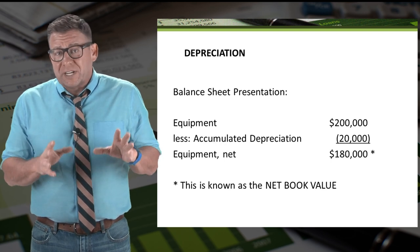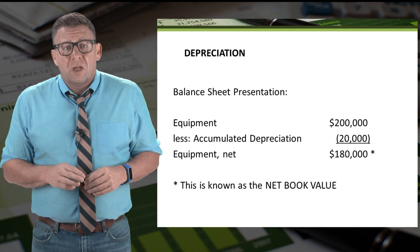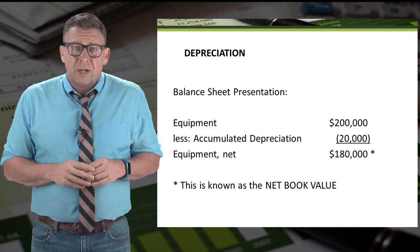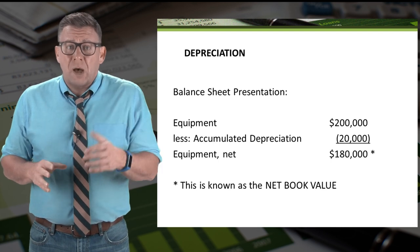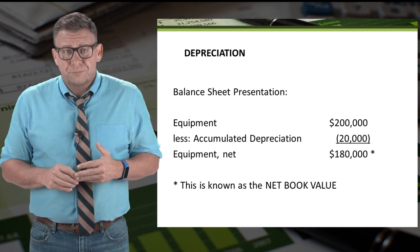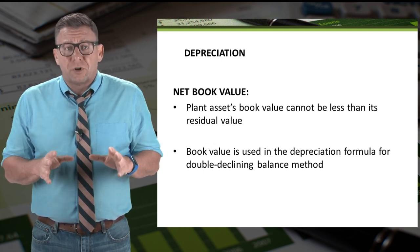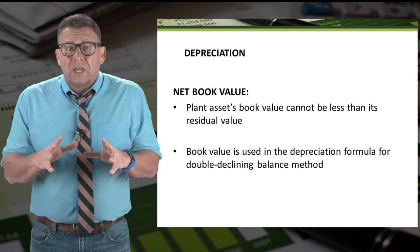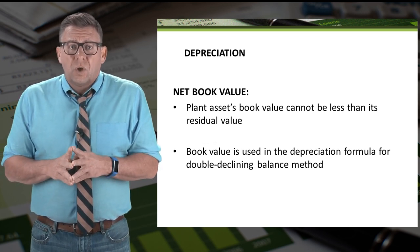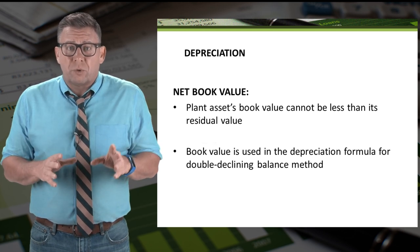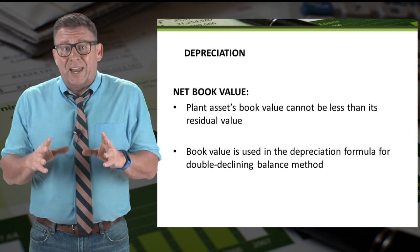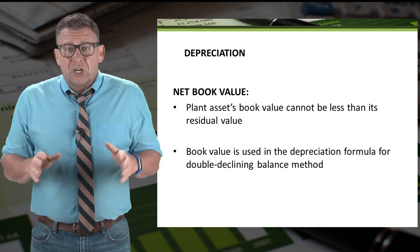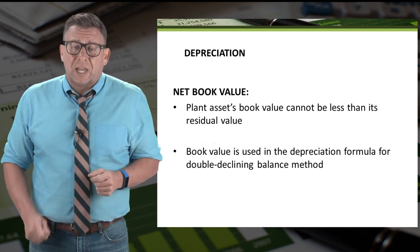Plant assets are presented on the balance sheet by listing the cost of the plant asset and subtracting the amount of accumulated depreciation, giving us the net amount — commonly called net book value. Net book value is an important concept: we cannot depreciate any plant asset so that its net book value is less than its residual value. When recording depreciation, we might record less than we calculate if doing so would drop book value below residual value. Additionally, book value is part of the depreciation formula for the double declining balance method.